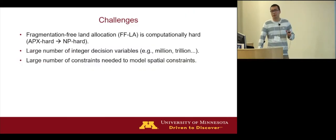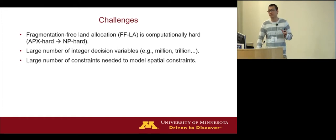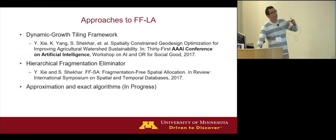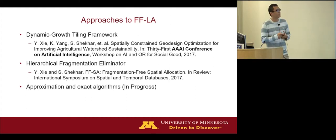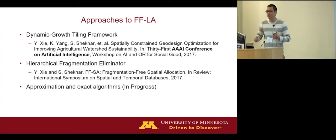This problem is computationally very challenging — it is an NP-hard problem, among the hardest in computer science. We have a large number of decision variables in real-world watersheds along with a large number of constraints to remove fragmentation. We have proposed two approaches: the first, published at the AAAI conference, uses a bottom-up approach; the second hierarchically removes fragmentation from a fragmented solution and is currently under review. We are also working on approximation and exact algorithms that can provide guarantees on solution quality.